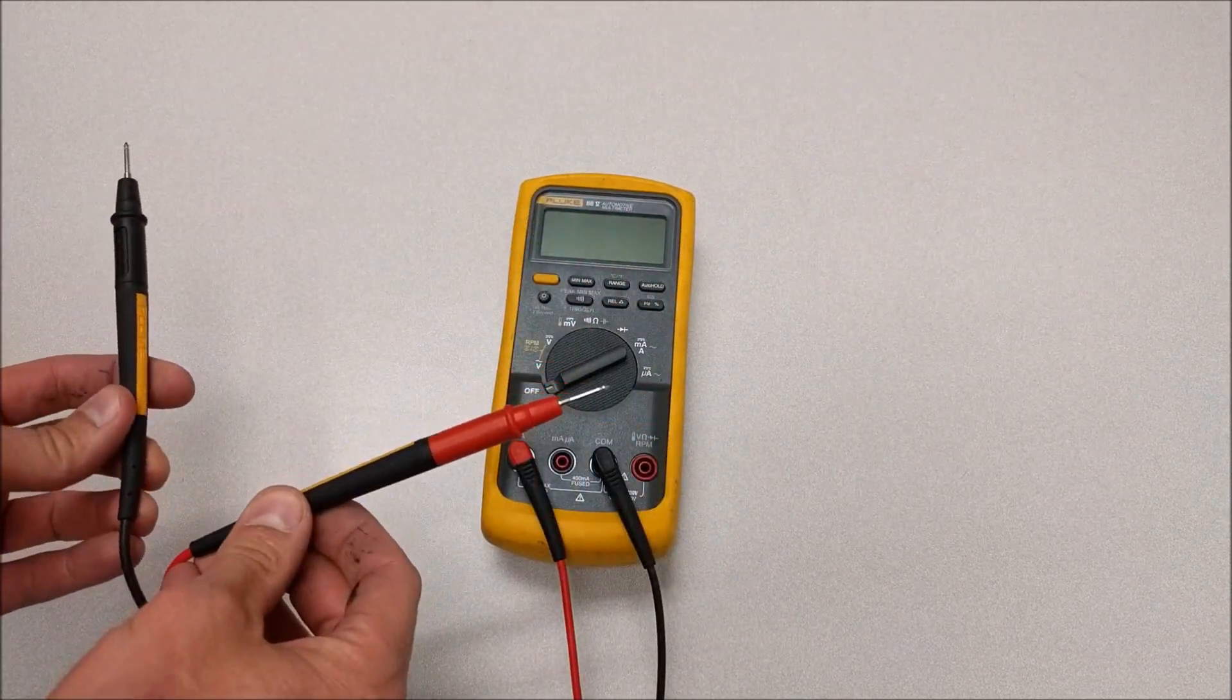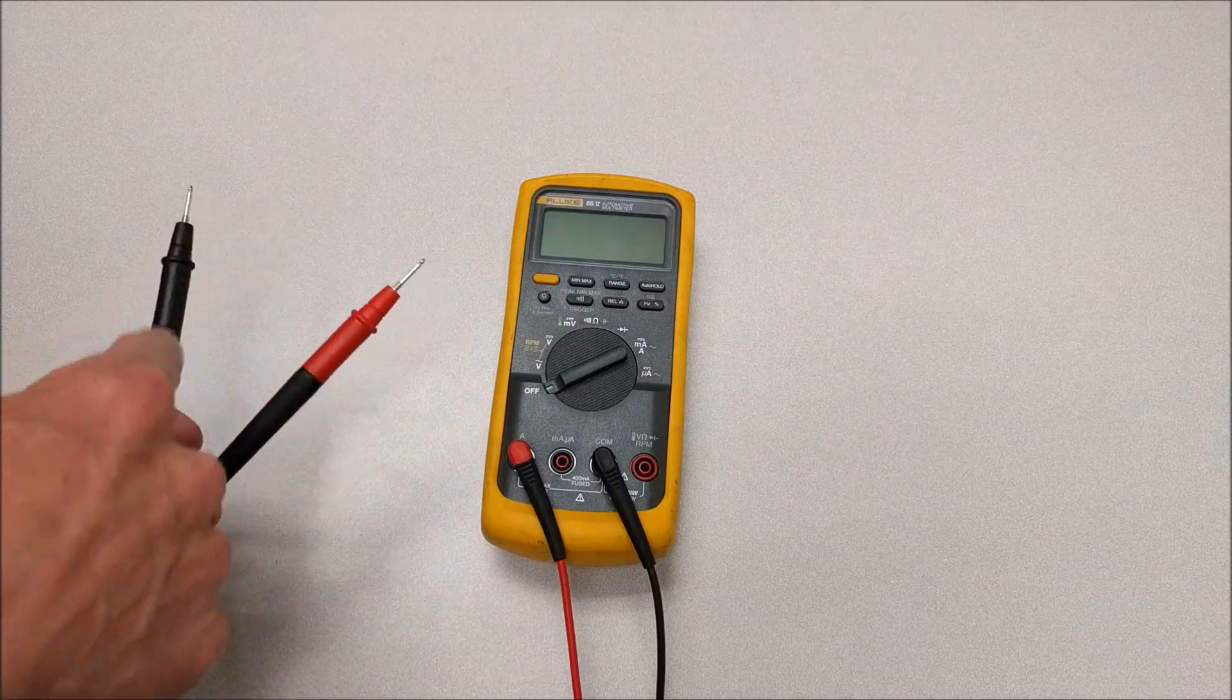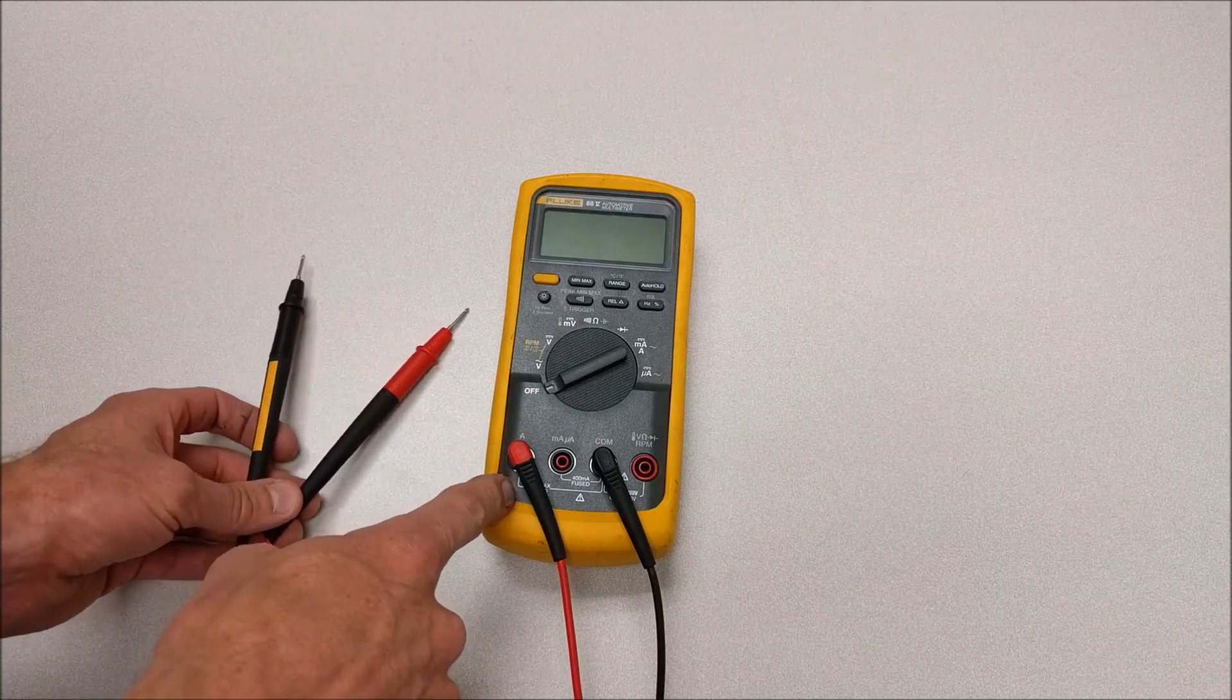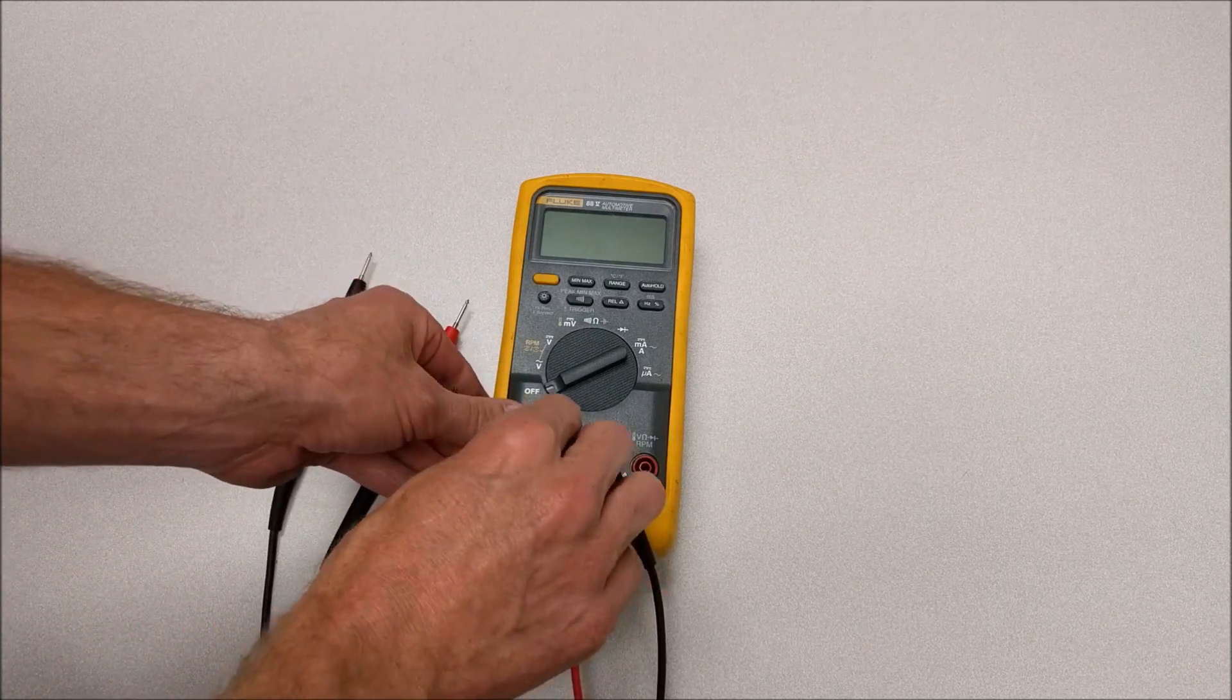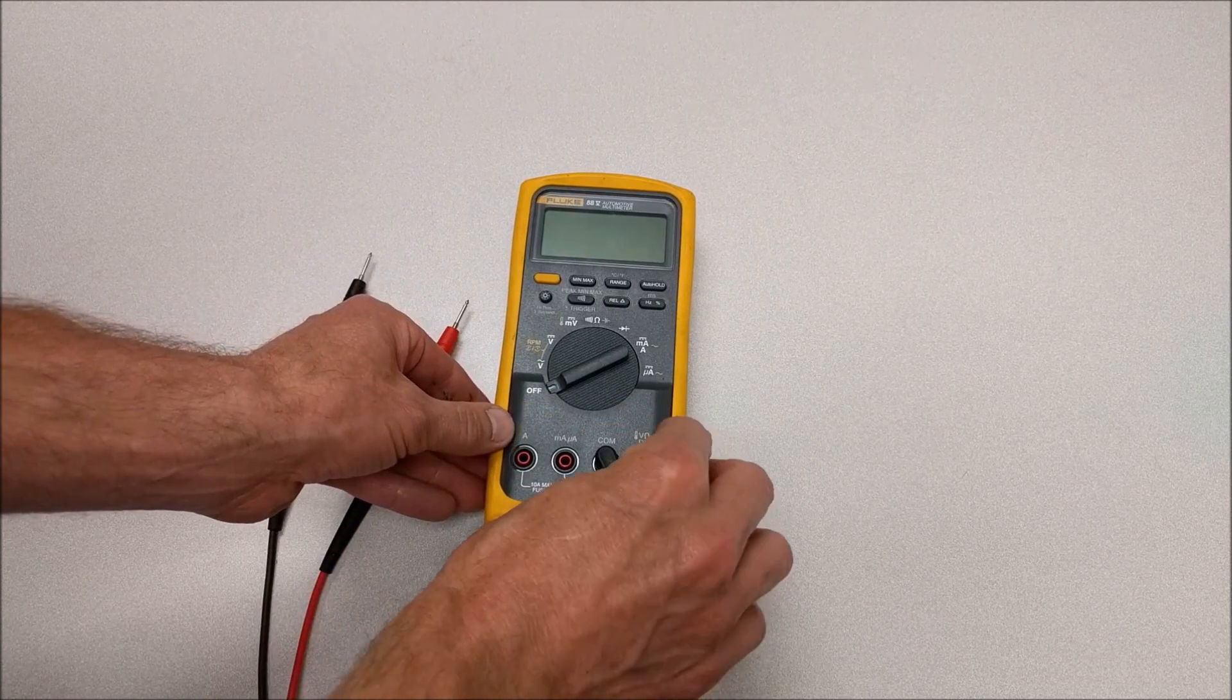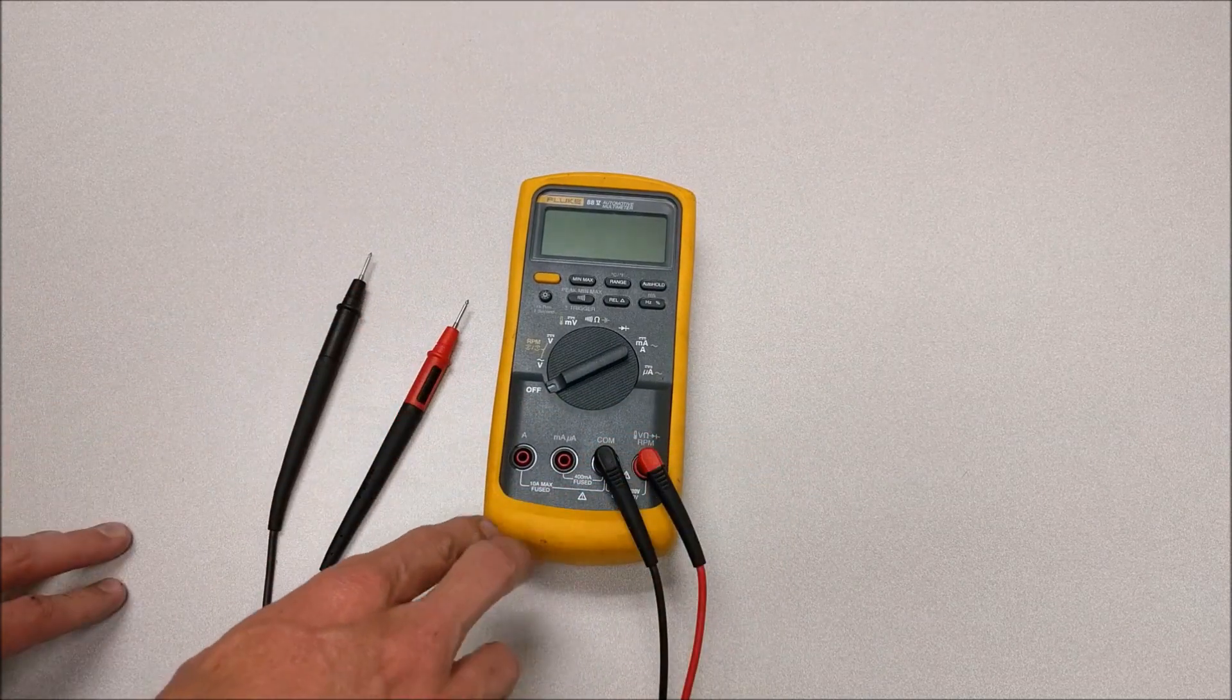You place the leads in series with the circuit so that all the current has to pass through the meter, and that's how it measures it. So in order to protect the meter so that too much current doesn't destroy it, they're fused.